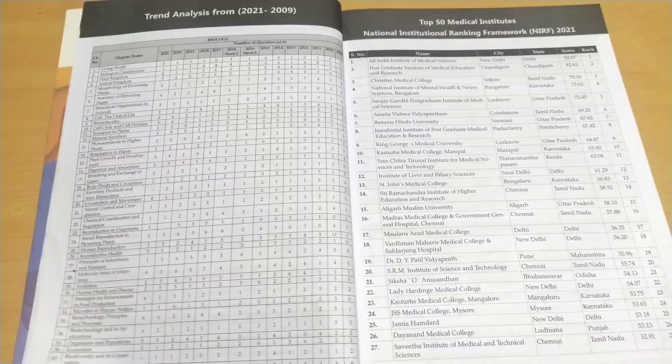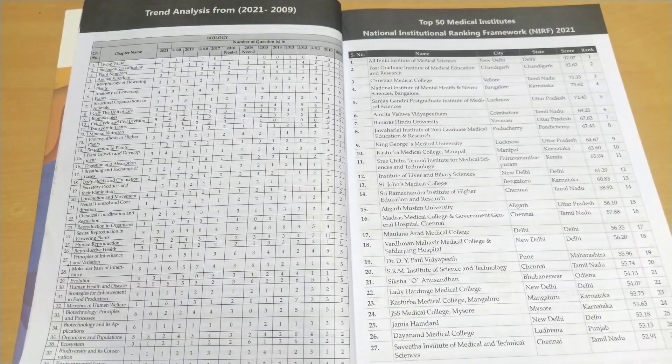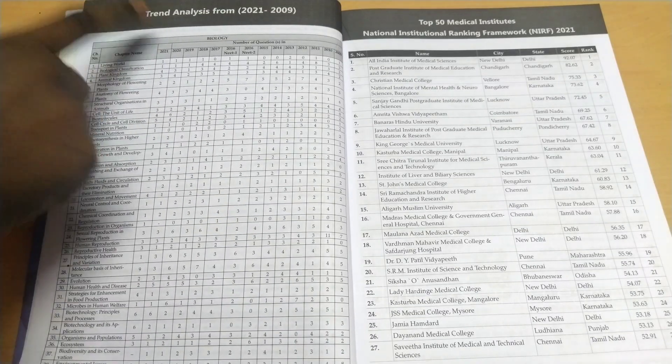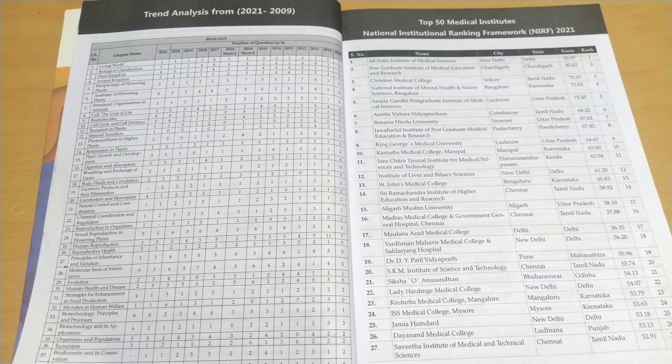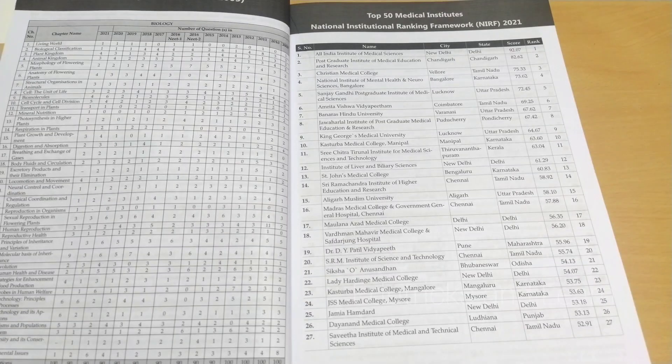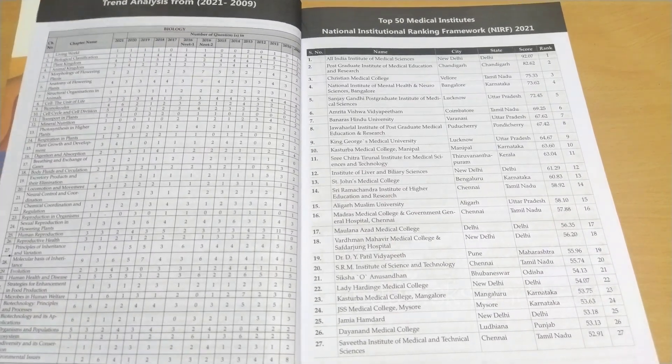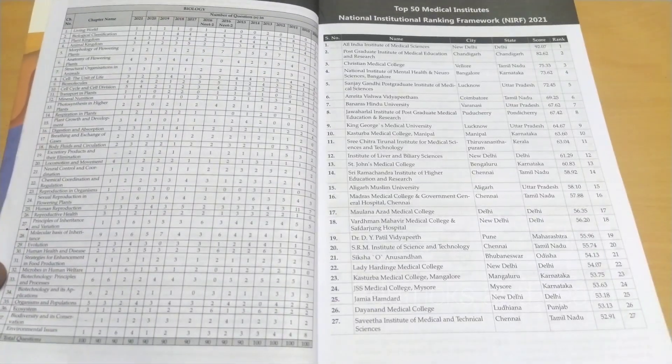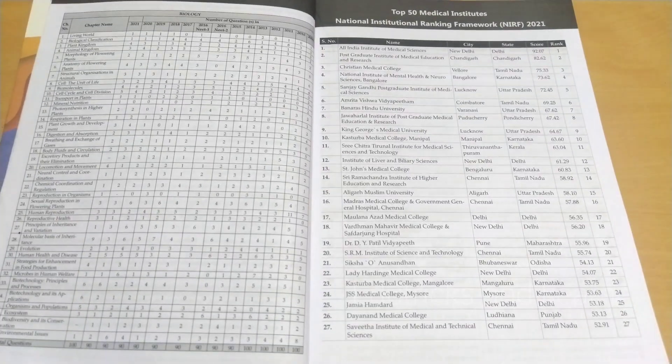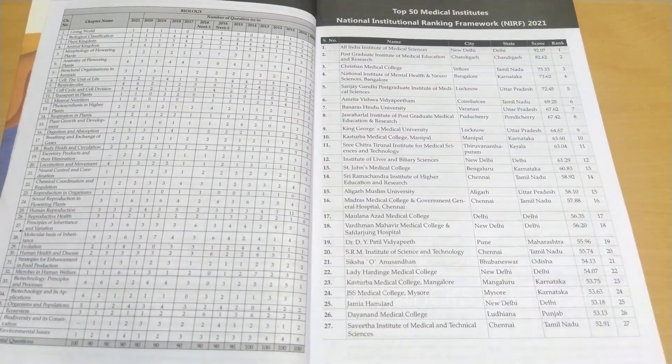After that, they've given the trend analysis, which means from each lesson, in which year how many questions came. Then they've given the top 50 medical institutions including AIIMS, CMC Vellore, JIPMER College, etc. This is a nice thing to motivate students.